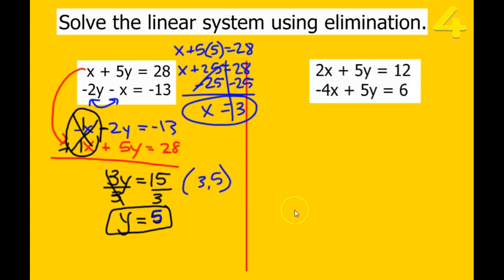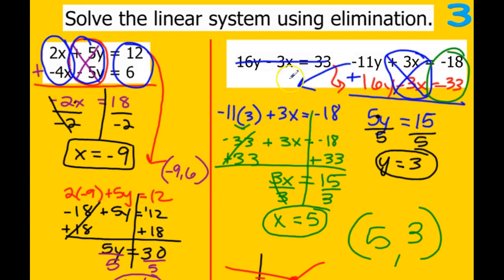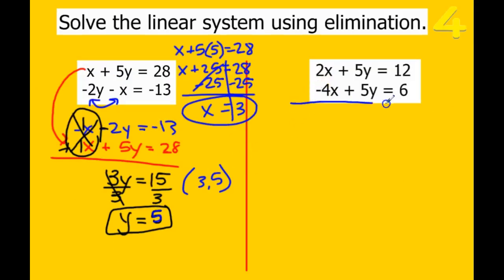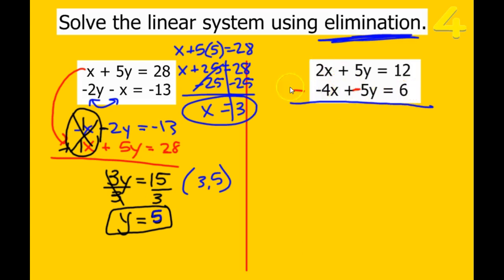This next one is leading a bit into tomorrow. Some equations aren't set up nicely — if we add them, 2 minus 4 won't eliminate, and 5 plus 5 gives 10y, which also won't eliminate. But the y coefficients are the same number, so instead of adding, we can subtract. If we're going to subtract, we can't just subtract the 5y — we need to subtract all three terms. Think of these as individual subtraction problems: subtracting these two, subtracting these two, and subtracting these two.